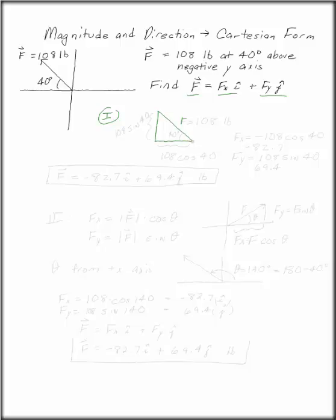F is 108 pounds. This is going to be 108 times cosine of 40 and the vertical piece is 108 times sine of 40.